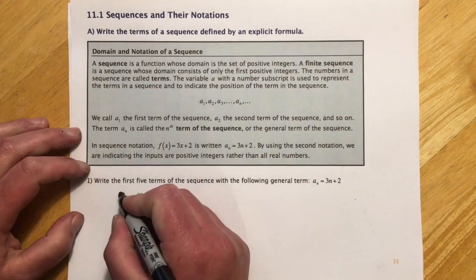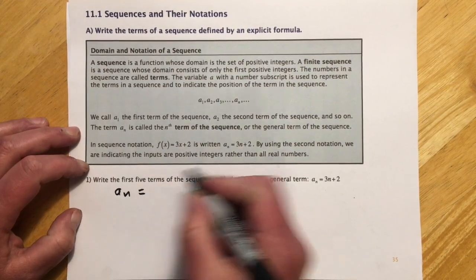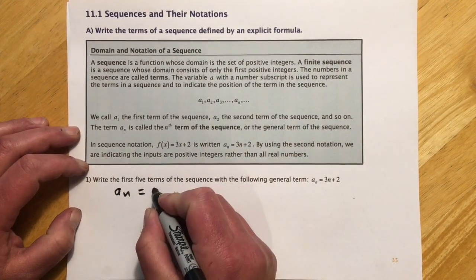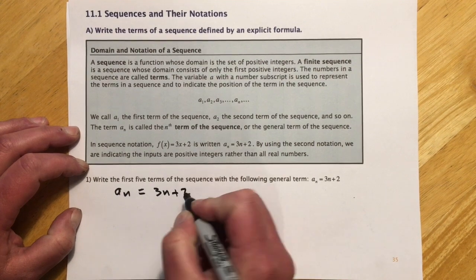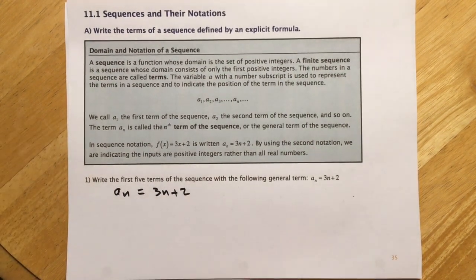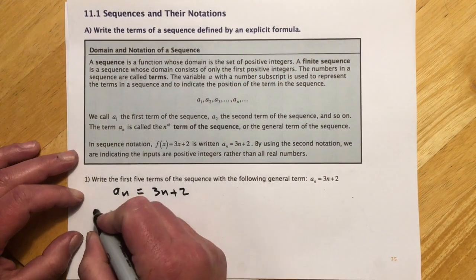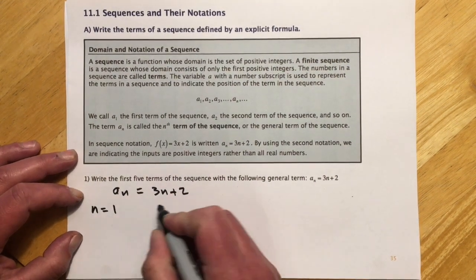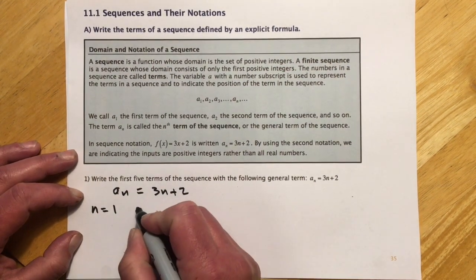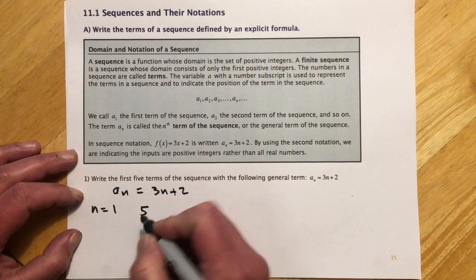So we're given, the nth term is given by this formula that I was using up here, and it's just asking us to write out what the first five terms would be.